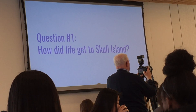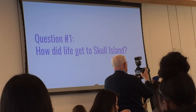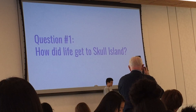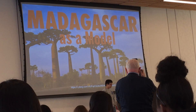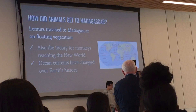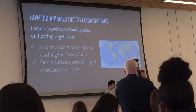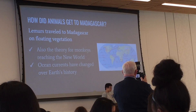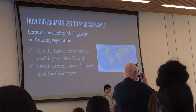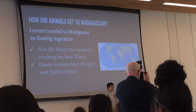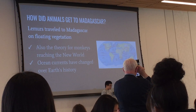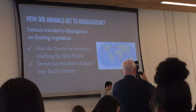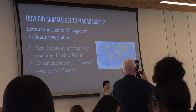Our first question is how did life get to Skull Island? In our world today we have a really good example of an isolated island with a lot of animals: Madagascar. Today's most favored theory is that lemurs traveled to Madagascar on floating vegetation. It's most supported because that's the same theory for how monkeys got to the New World. Throughout Earth's history there have been many different ocean currents, so it's not unlikely there was one leading from Africa's coast toward Madagascar.